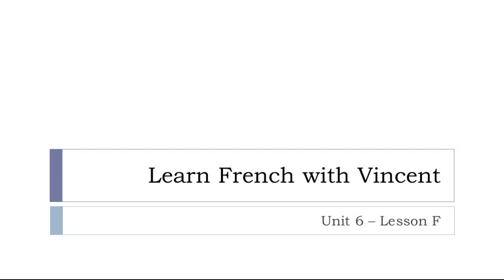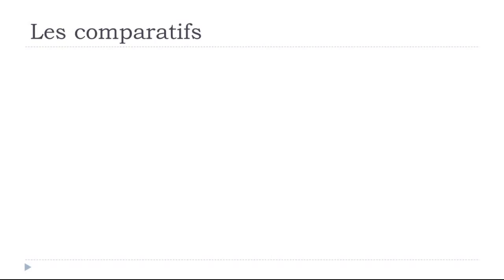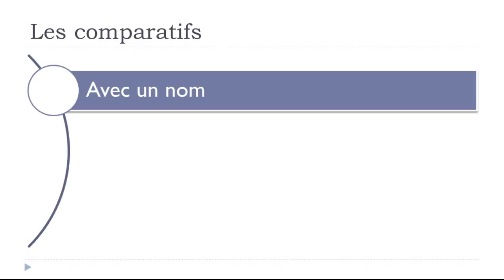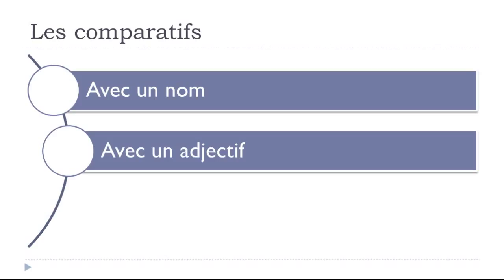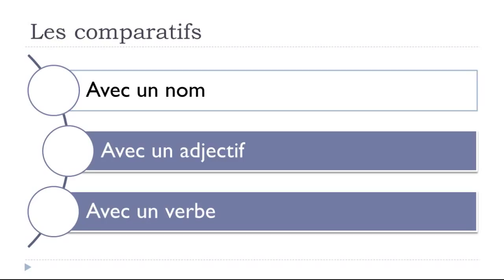Bonjour à tous and welcome to Learn French with Vincent. This is Unité 6, Leçon F. In this lesson we'll discover les comparatifs — how to compare in French. We'll discover three types of structures: the first one avec un nom (with a noun), the second avec un adjectif (with an adjective), and the last avec un verbe (with a verb).